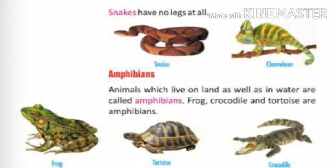Now we come to amphibians. Animals which live on land as well as in water are called amphibians. Frogs live in water. Tortoise and crocodiles also live in water and on land. Those who live both in water and on land are called amphibians. Examples of amphibians are frog, crocodile, and tortoise.